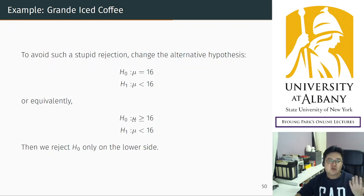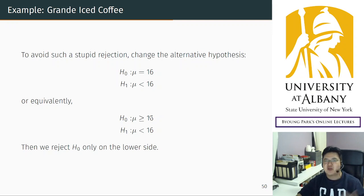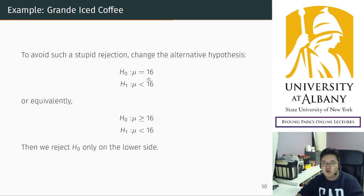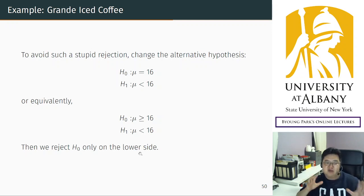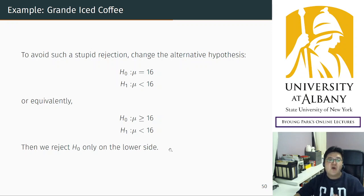You may think more than 16 ounces is unlikely or you simply don't care. So we consider 16 ounces or lower — we focus only on the lower side. We don't care what's going on in the upper tail. That is the basic motivation of the one-tail test.